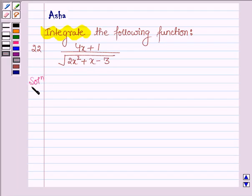So let's start with the solution and we have to integrate the given function. So we have integral 4x plus 1 upon root over 2x square plus x minus 3 into dx.